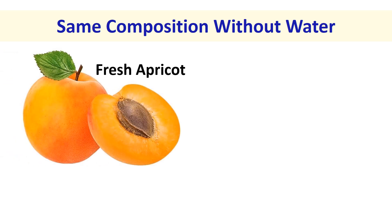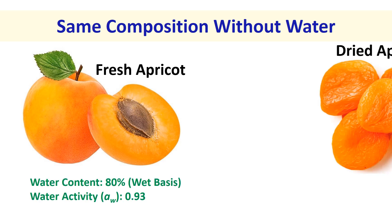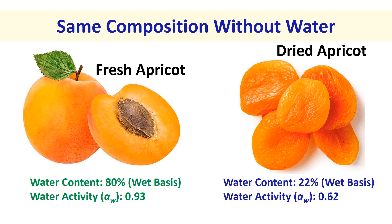First, same composition with different water contents. We can consider fresh and dried apricots. In both cases, solutes are the same but water contents are different. Water content in fresh apricot is 80% and water activity is 0.93, while dried apricot contains 22% water and its water activity is 0.62.